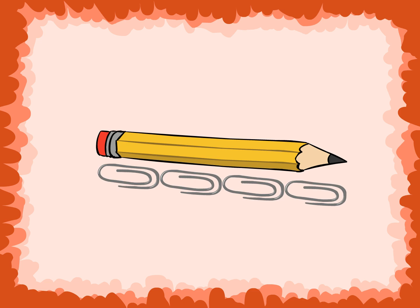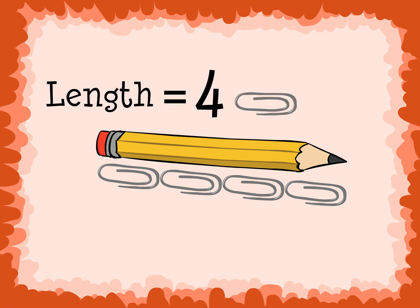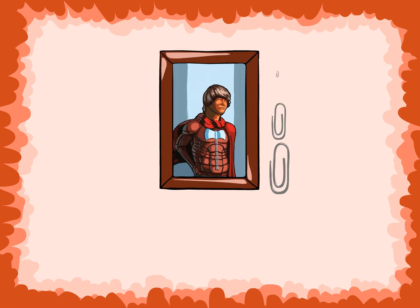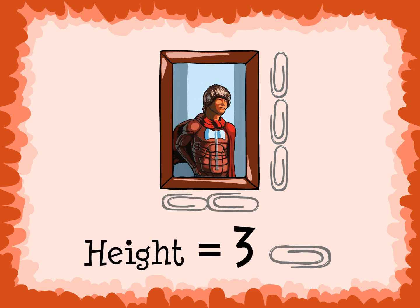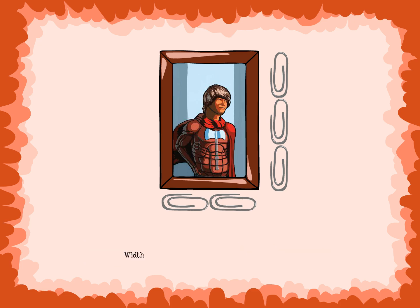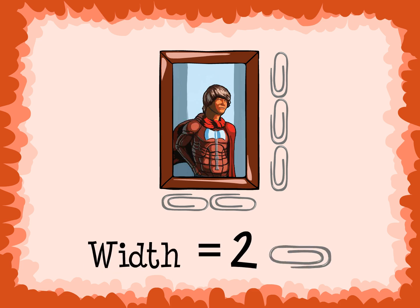As you can see here, the pencil is four paper clips long — the length of the pencil is four paper clips. The picture frame is about three paper clips tall, so the height of the frame is about three paper clips. The picture frame is about two paper clips wide, so the width of the frame is about two paper clips.